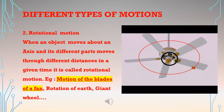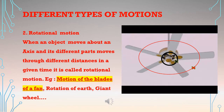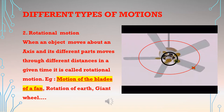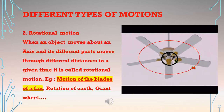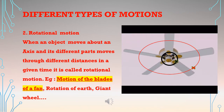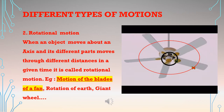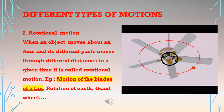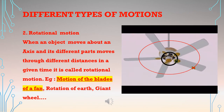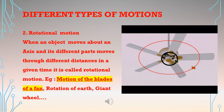Imagine two points on one blade of a fan — a black point near the center and a red point far from the center. When the fan rotates, the black point near the center makes a small circle while the red point makes a larger one. This shows that different points on the fan travel through different distances when the fan rotates — that is what defines rotational motion.